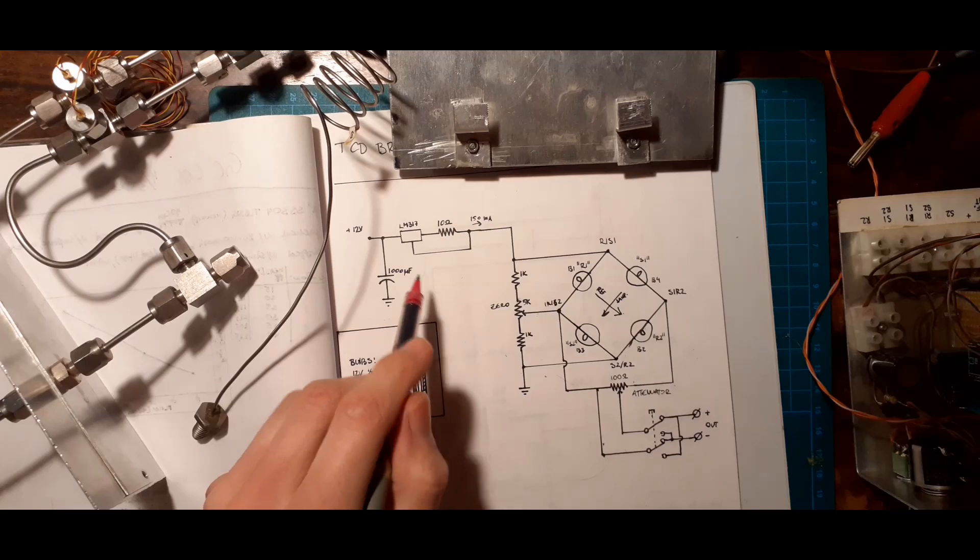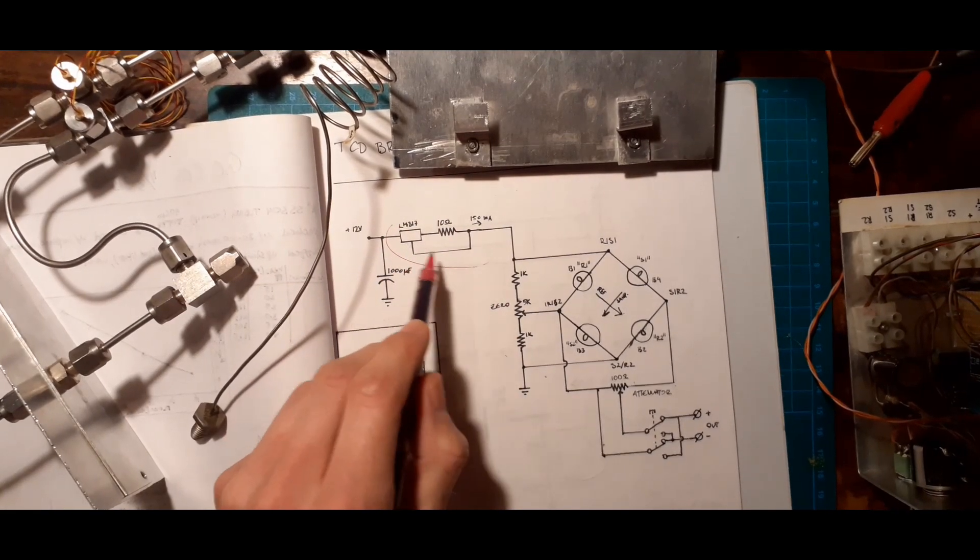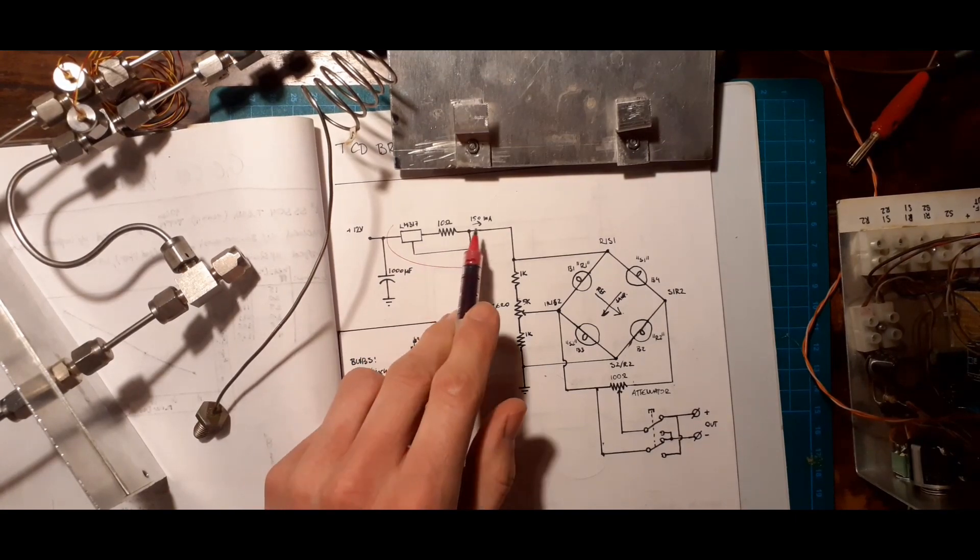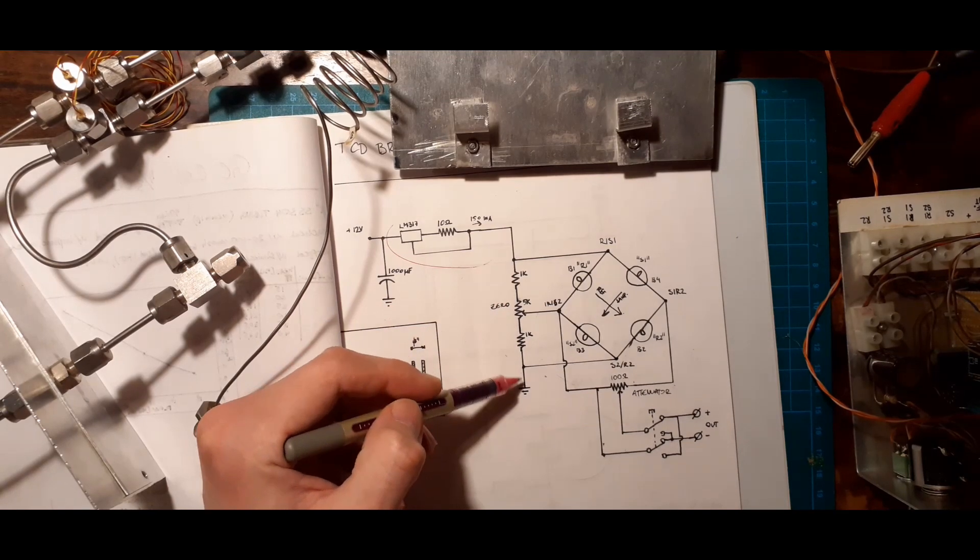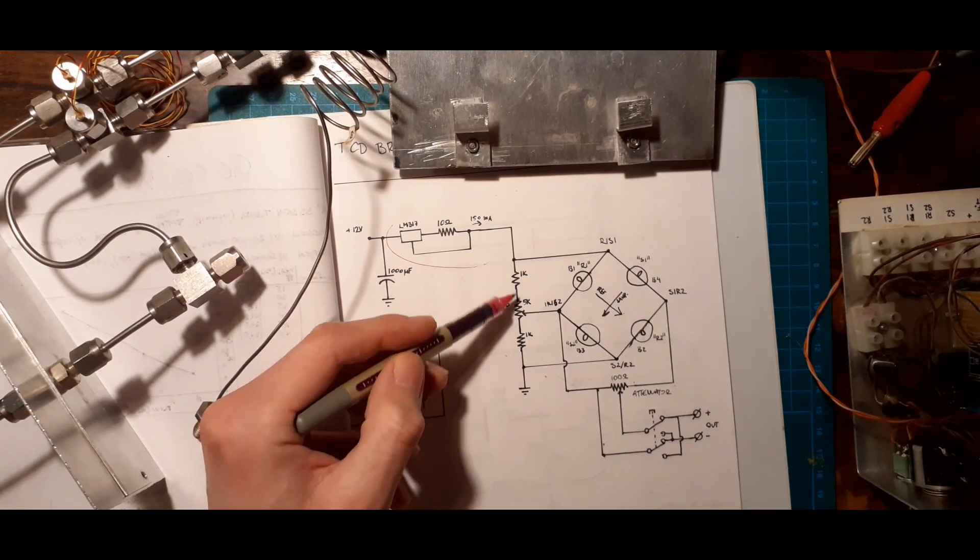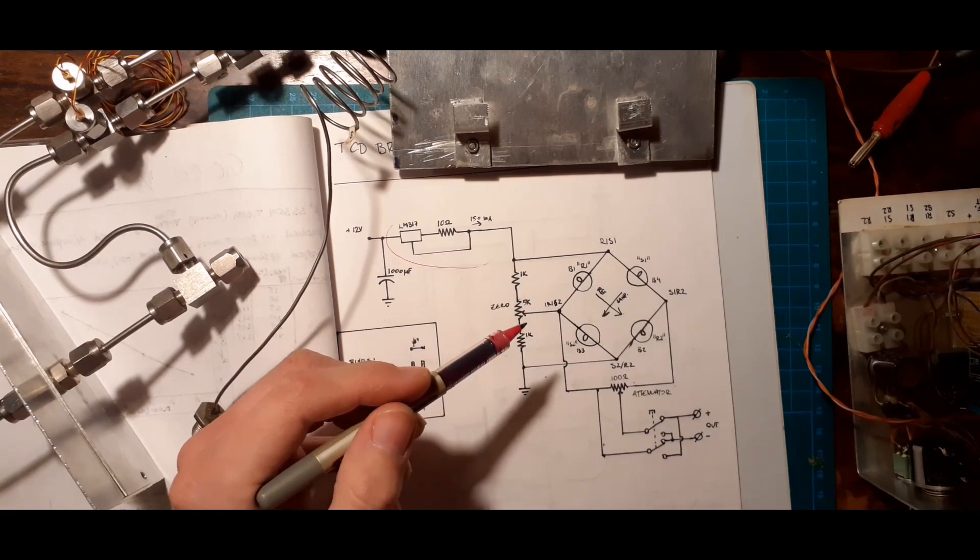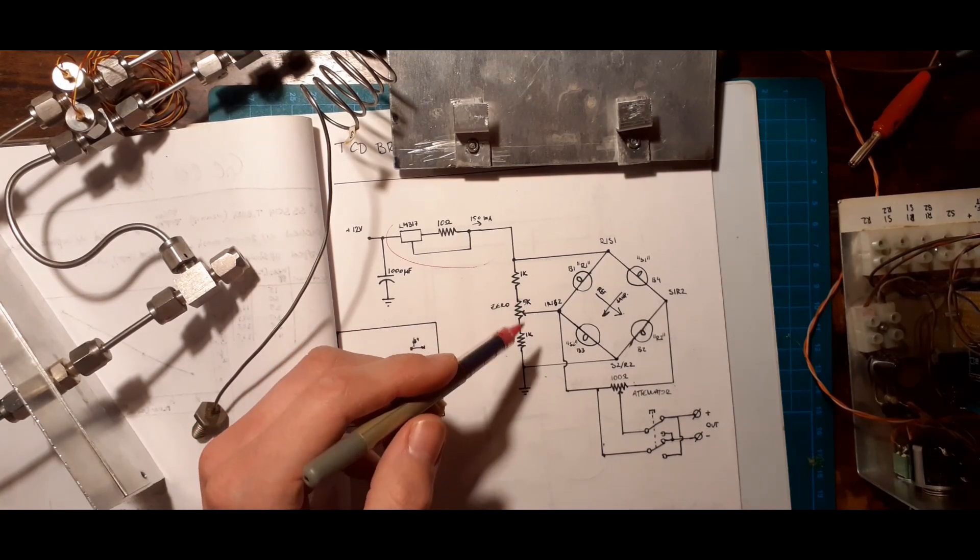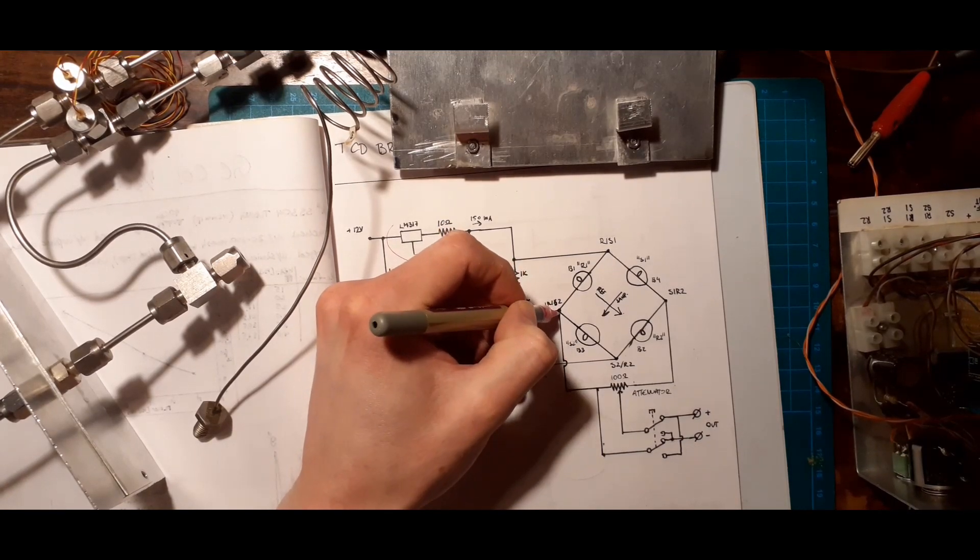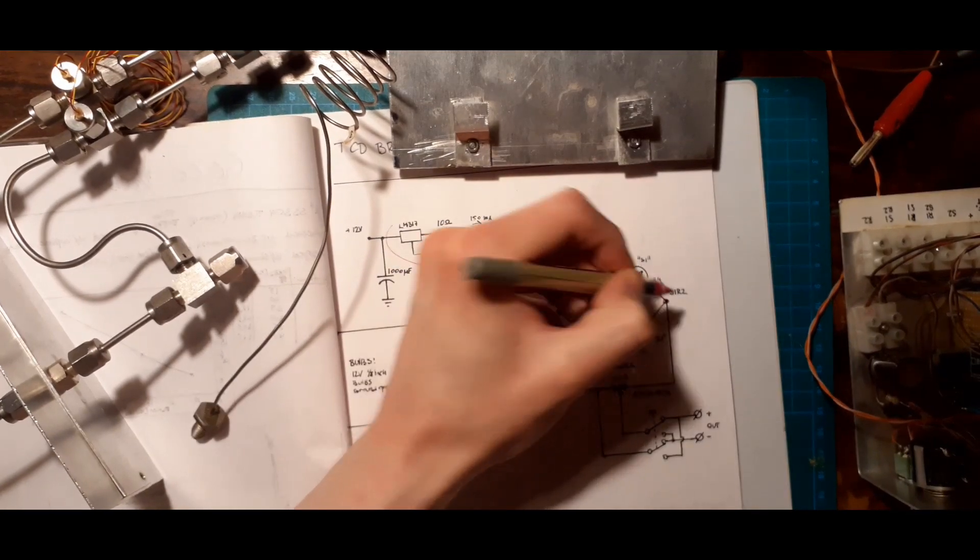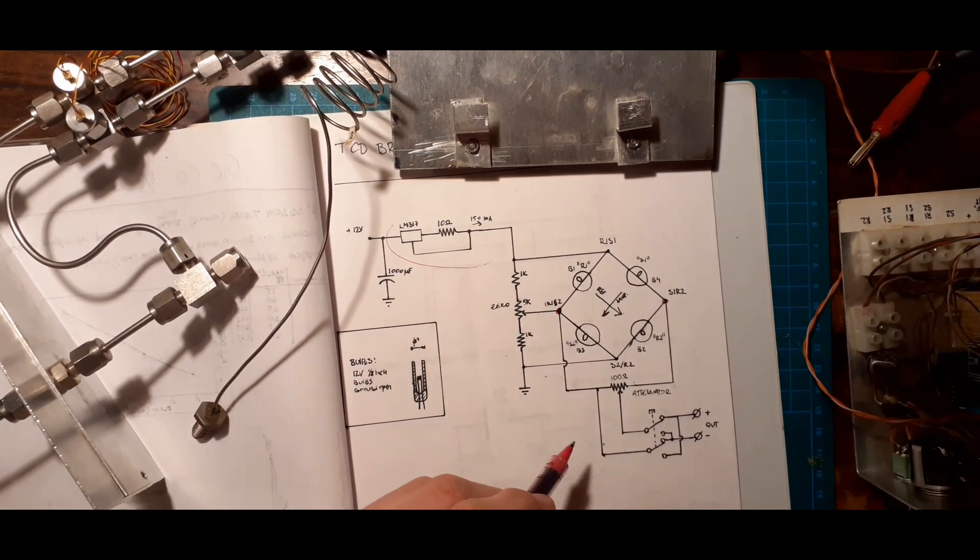Additional circuitry is a constant current source here. This is just an LM317 set up for 150 milliamps. That's about maximum for these bulbs. Then there is a potentiometer here, which sets the zero. It's of course important that you can null this out, so you get a zero difference. What you're really measuring is the difference in voltage between these two points, and you get a differential signal out of that.